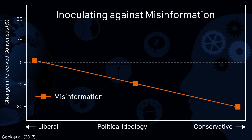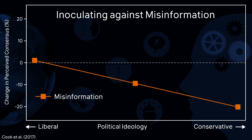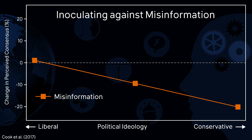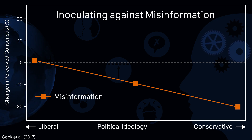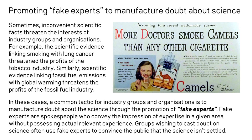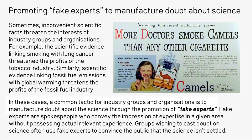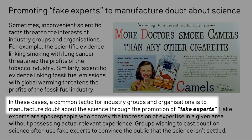In my experiment one group was shown just the misinformation by itself. Amongst this group the misinformation had a negative and polarizing effect. Another group was shown an inoculating message before the misinformation. But in contrast to van der Linden's experiment, I didn't mention the global warming petition project at all. Instead I focused on one of the techniques used to mislead — the technique of fake experts, or argument from false authority. This is where a person appeals to their own expertise and yet doesn't have the relevant expertise.